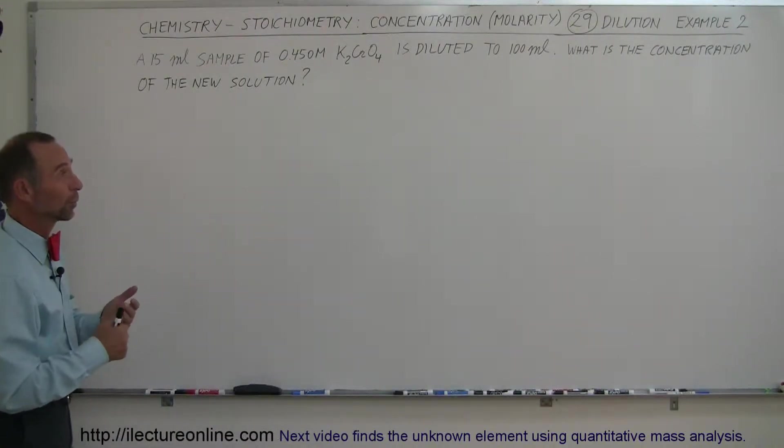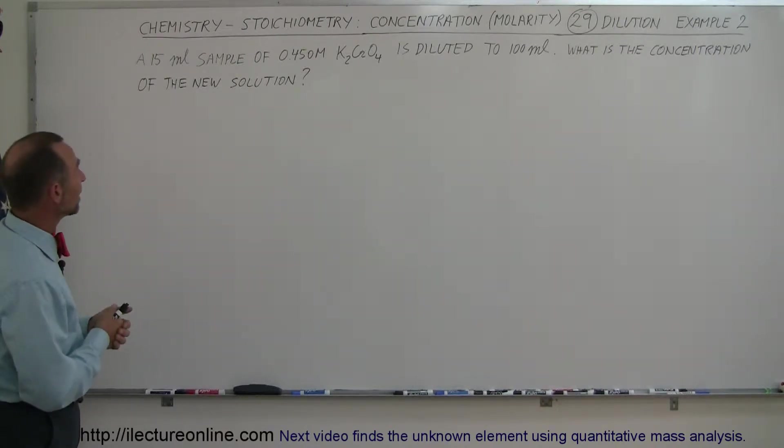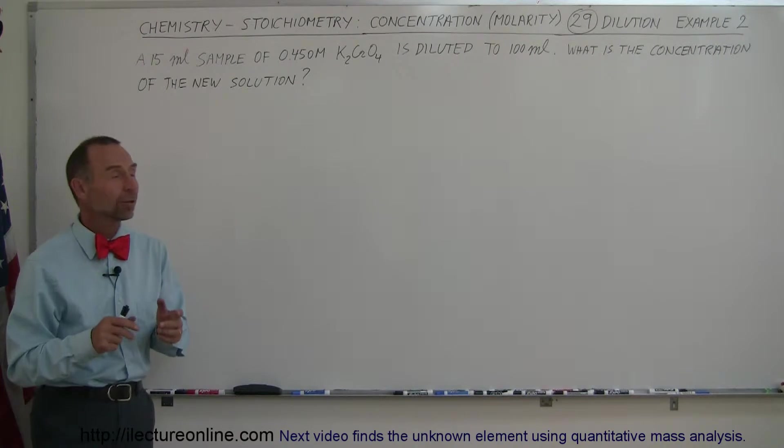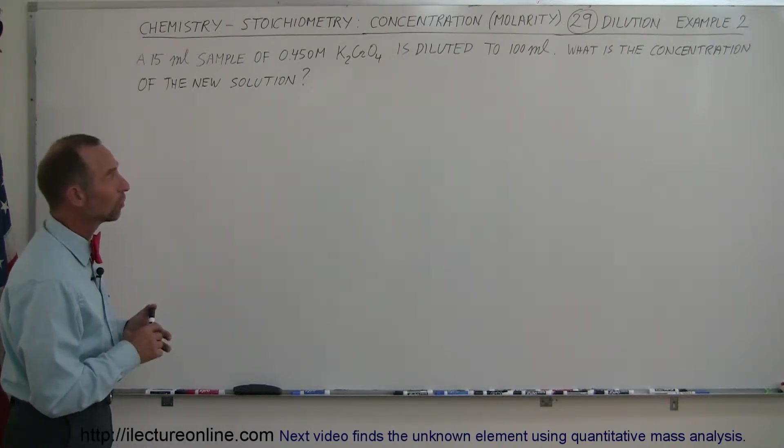And here's another example of how to work with the dilution of solutions that have a particular molarity. So let's say we start off with a 15 milliliter sample of 0.45 molar potassium chromate and we want to dilute it to 100 milliliters of a new solution. What is the concentration of this new solution?